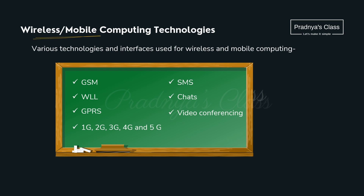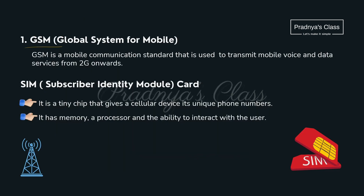Here are some wireless and mobile computing technologies. Look at the list — you know what SMS, chats, and video conferencing are. The first wireless technology is GSM — Global System for Mobile. Remember the full form. It is a mobile communication standard used to transmit mobile voice and data services from 2G onwards.